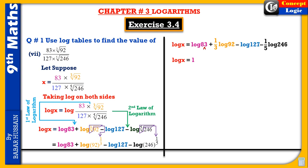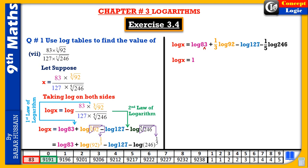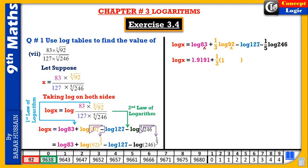The characteristic of log 83 is 1. Using the logarithm table, the mantissa is 9191. So log 83 = 1.9191. Plus (1/3) log 92: its characteristic is also 1 (one digit before decimal on the right), and its mantissa from the log table is 9638.